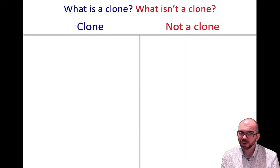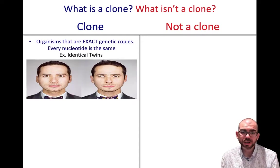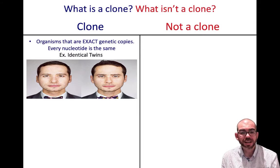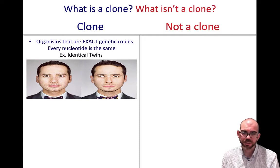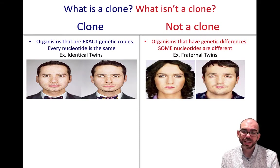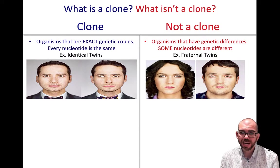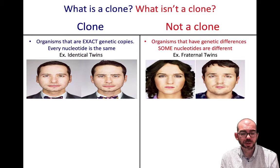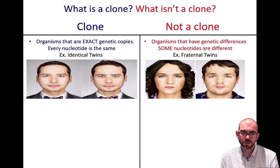Let's first specify what is and isn't a clone. A clone consists of two organisms that have the exact same nucleotide sequence — their DNA is the same. For example, identical twins have the exact same nucleotide sequence. That's different from two organisms with a unique nucleotide sequence, like fraternal twins, who are born at the same time but have different DNA.